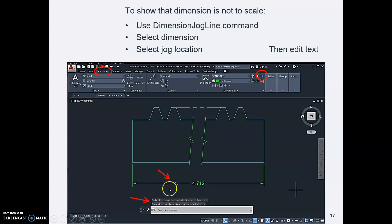So you select that jog icon and it will say specify jog location. Oh, first it will say select dimension. So you select your dimension. Then it will say specify jog location. So you just click wherever on your dimension line you would like the jog to be. And it will automatically put that in. It's super fast.